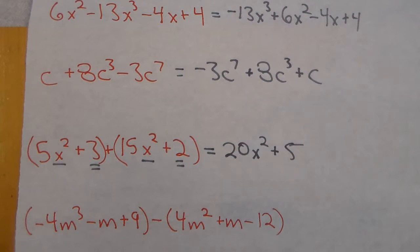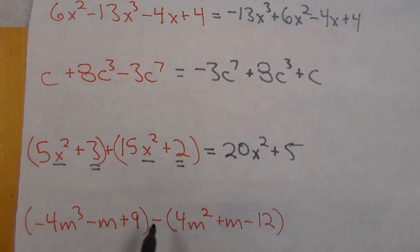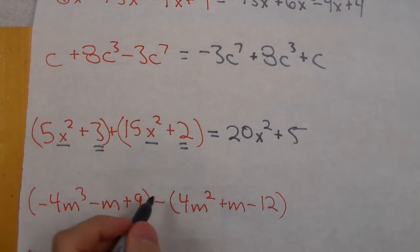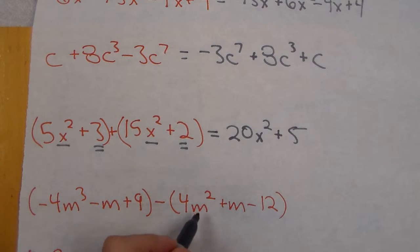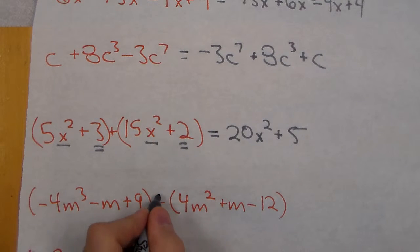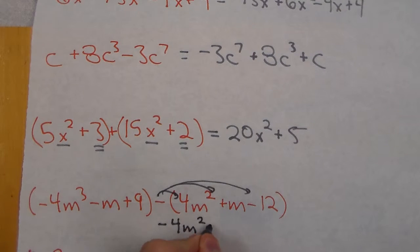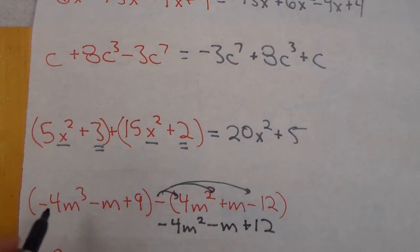Now if we did subtraction. Now subtraction is tough because sometimes we forget this negative. We just almost want to treat this just like distributive property. So instead of saying minus 4m² plus m minus 12, let's distribute in the negative and make it minus 4m² minus m plus 12 where I change all the signs.